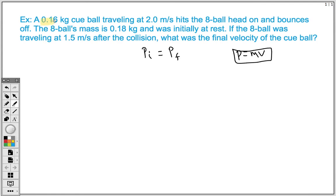So in this case, we know we have a 0.16 kilogram cue ball, and we know that it's traveling at 2 meters per second. That's its initial momentum, and as we read through the problem, our question here is, what was the final velocity of the cue ball? So that's all the information that we have for the cue ball.